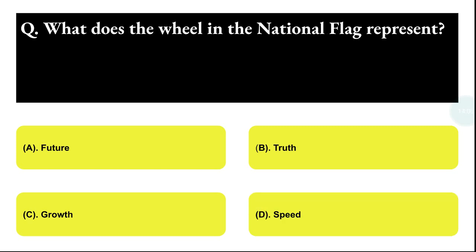Next question: what does the wheel in the national flag represent? Option A: Future, Option B: Truth, Option C: Growth, Option D: Speed. The correct answer is option C, that is growth.